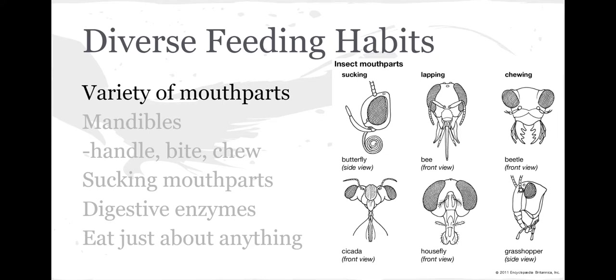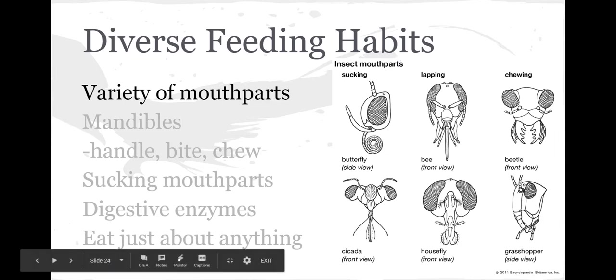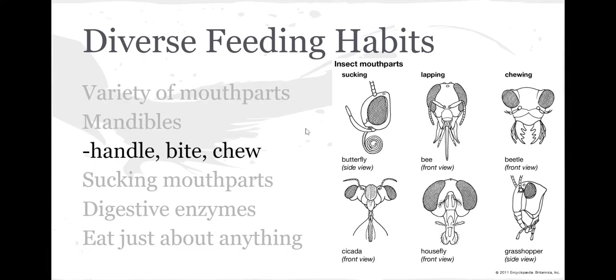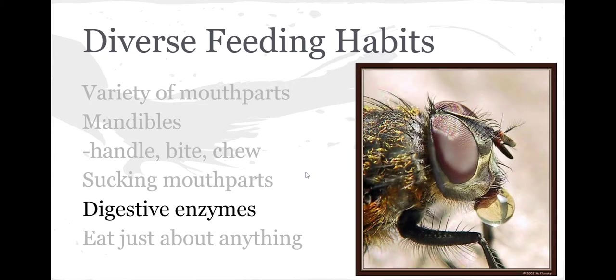Insects are very diverse in how they eat, so they have a variety of eating methods. Some mouth parts are good for sucking, some for lapping, some for chewing. Depending on the food substance the insect eats, its mouth parts are adapted to do those things. These mouth parts, called mandibles, can handle food, bite, chew, or suck up nectar.